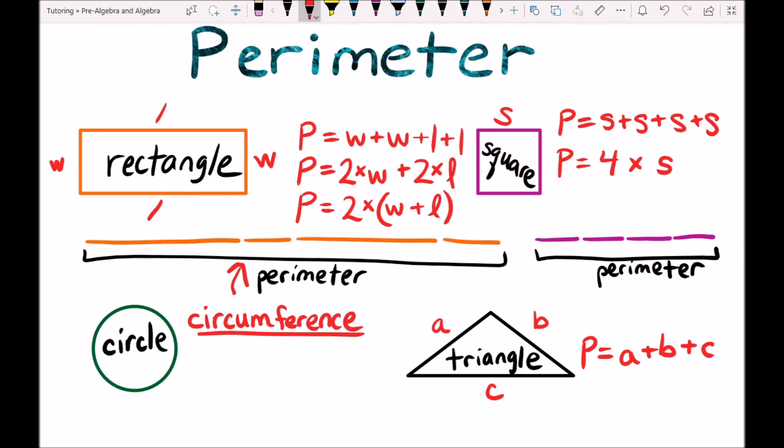And the circumference is equal to 2 times pi times the radius. And what the radius is is if we were to draw a dot in the middle of the circle and extend it until it touched the side.